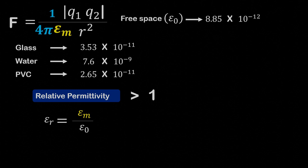For example, generally glass has relative permittivity of around 4, water has relative permittivity of 81, and PVC has relative permittivity of 3.